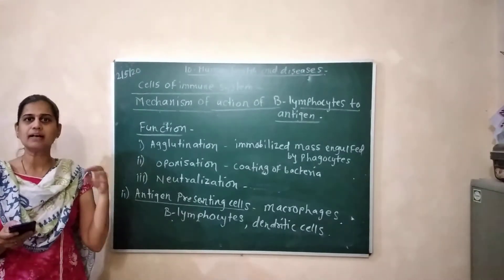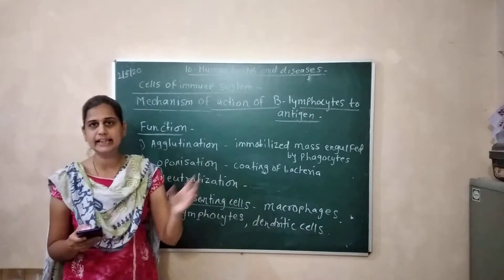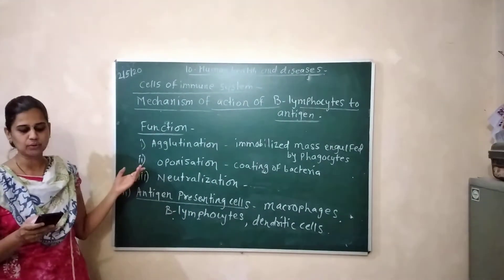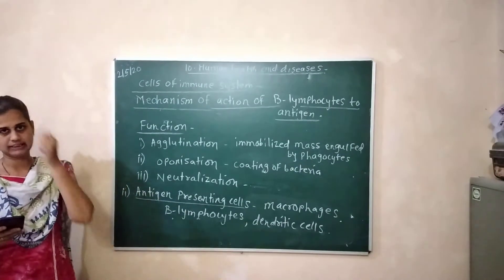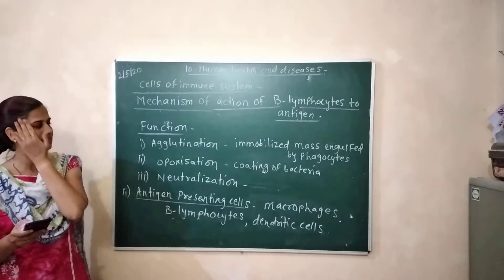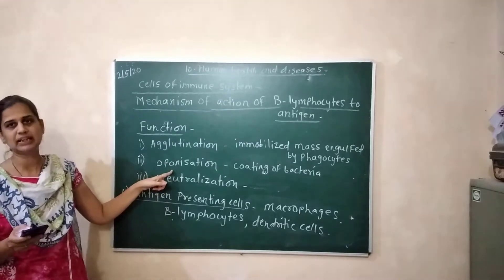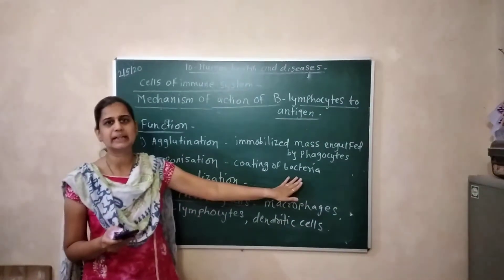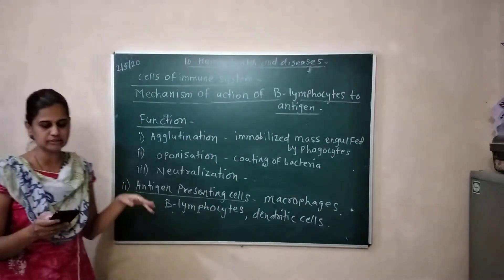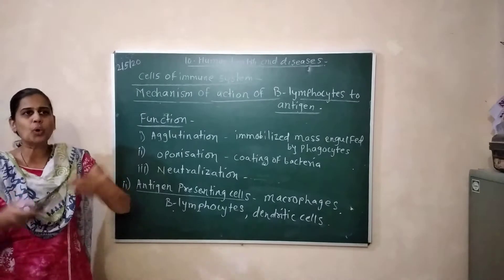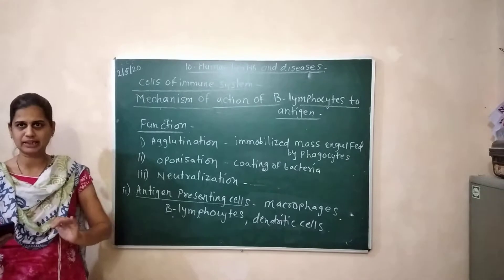The second function is opsonization. Antibodies coat the bacteria to facilitate subsequent phagocytosis by macrophages. The coating of the bacteria makes it easier for macrophages to engulf and destroy them.